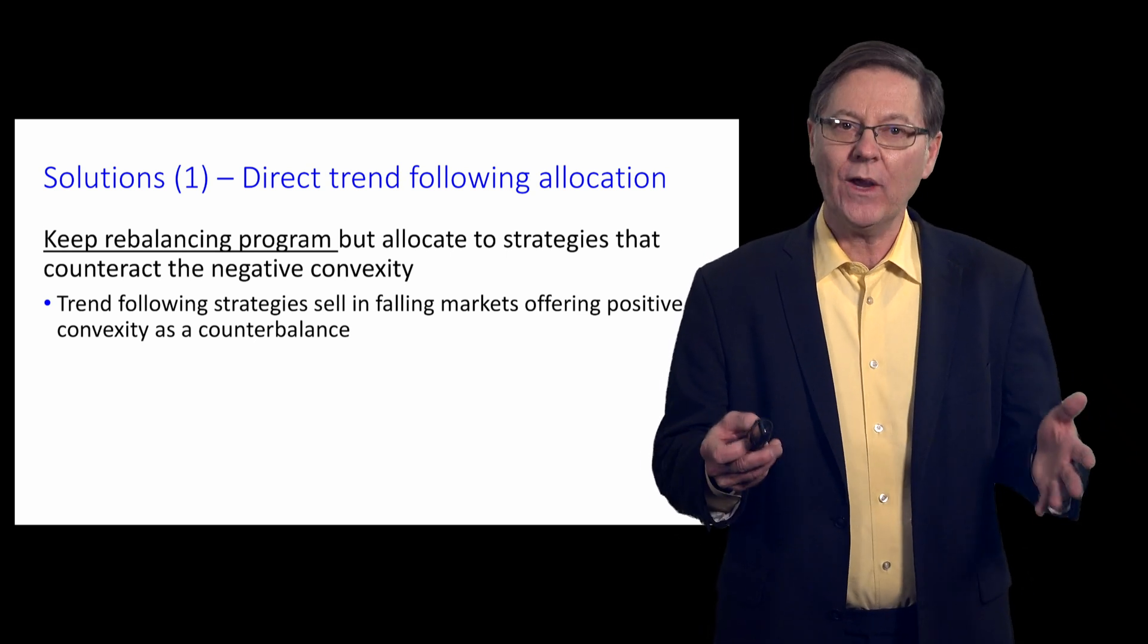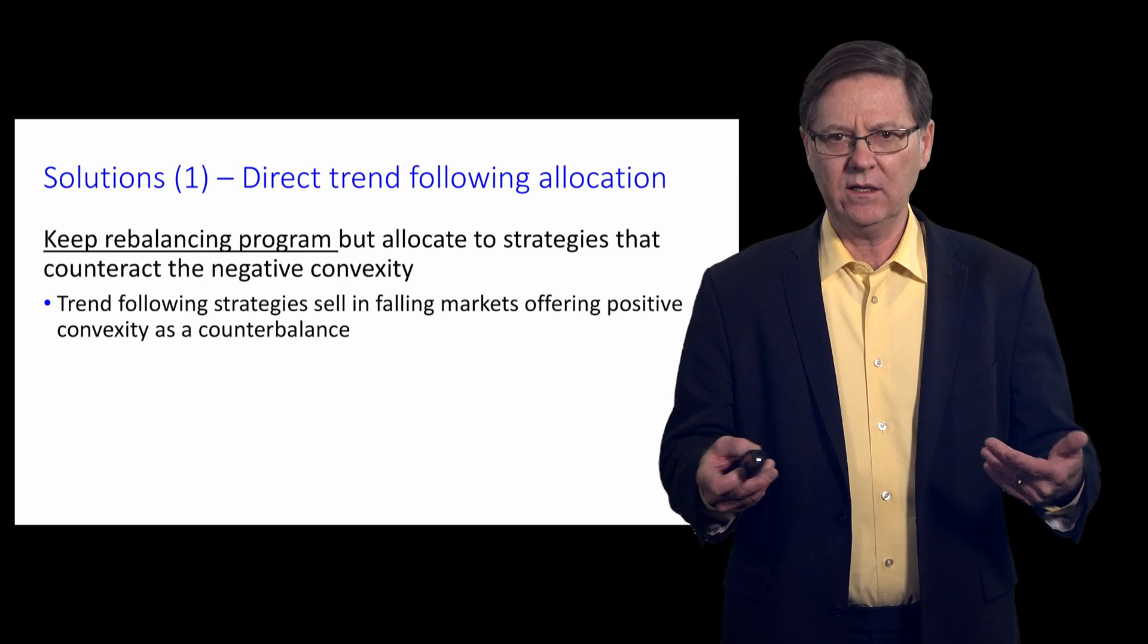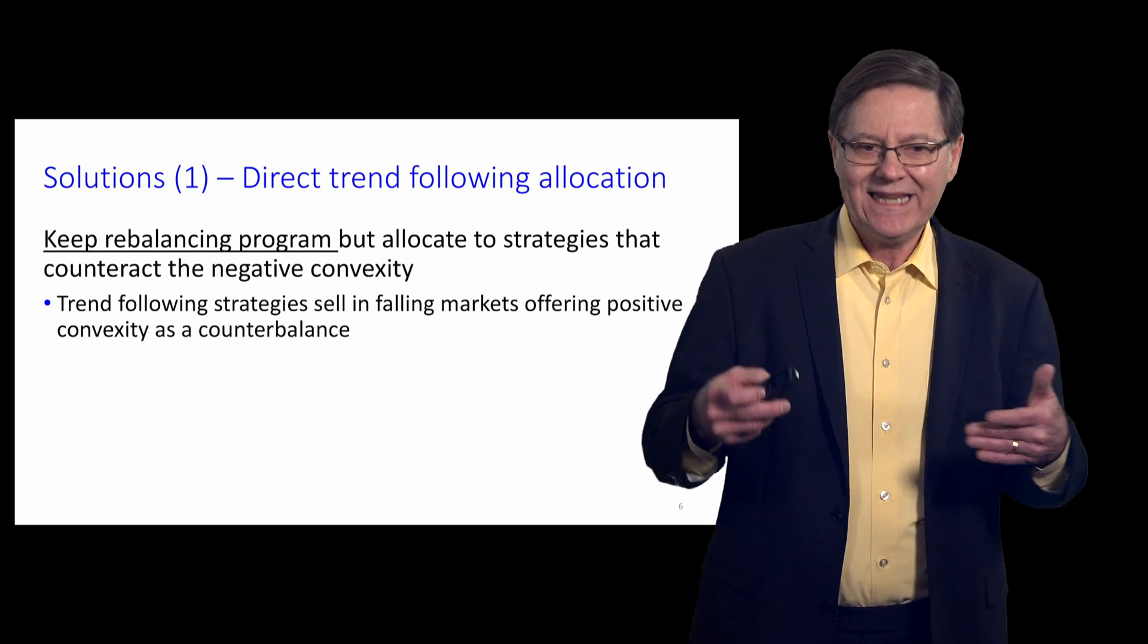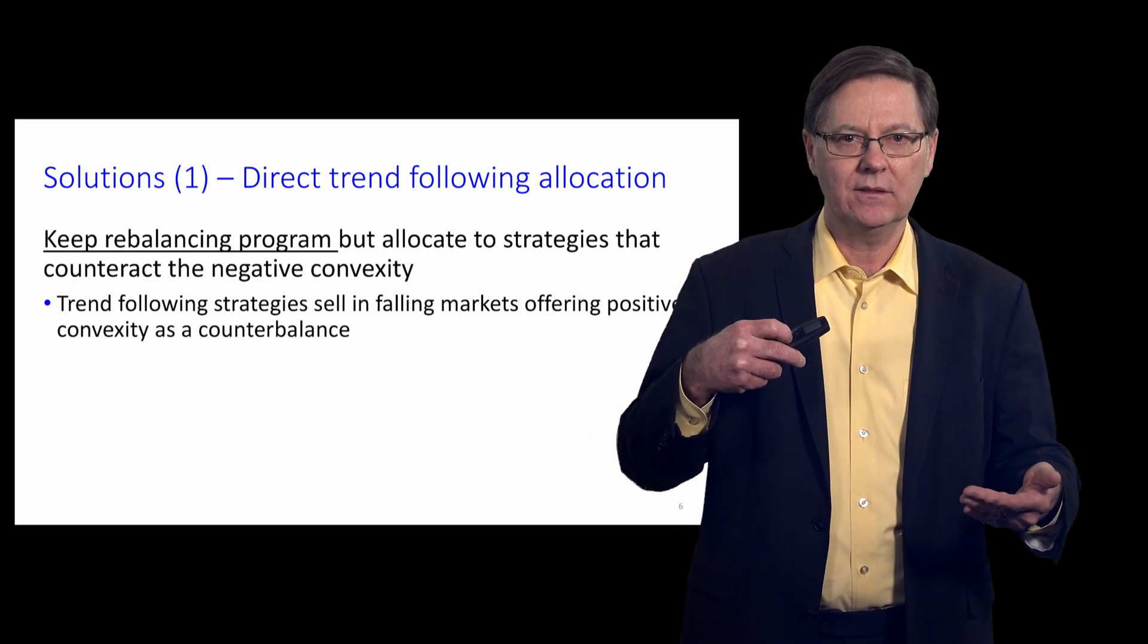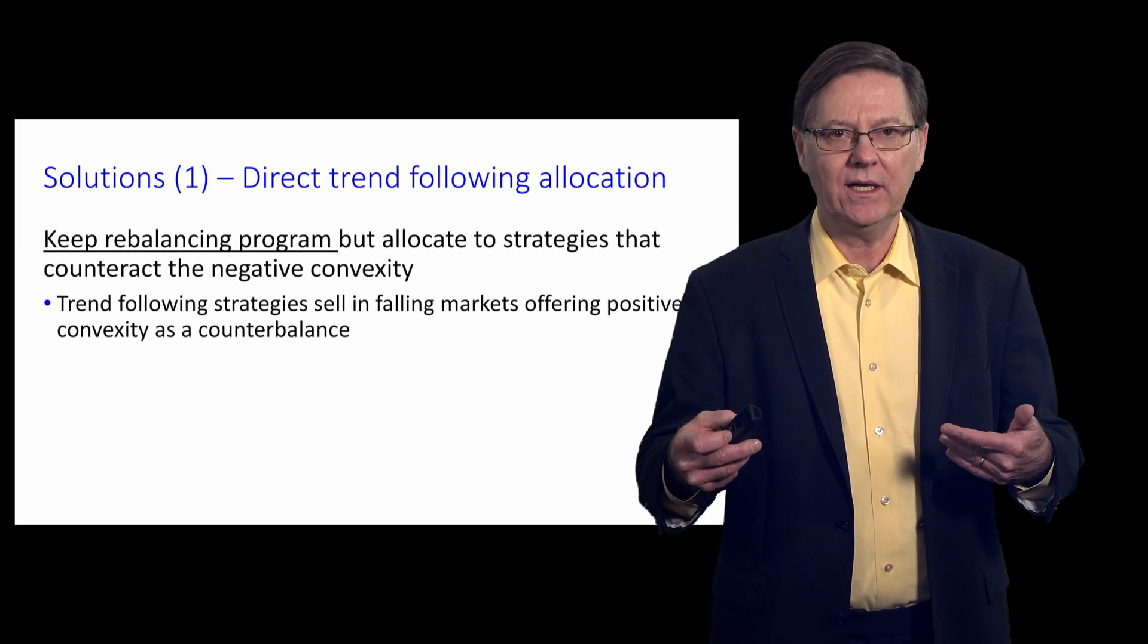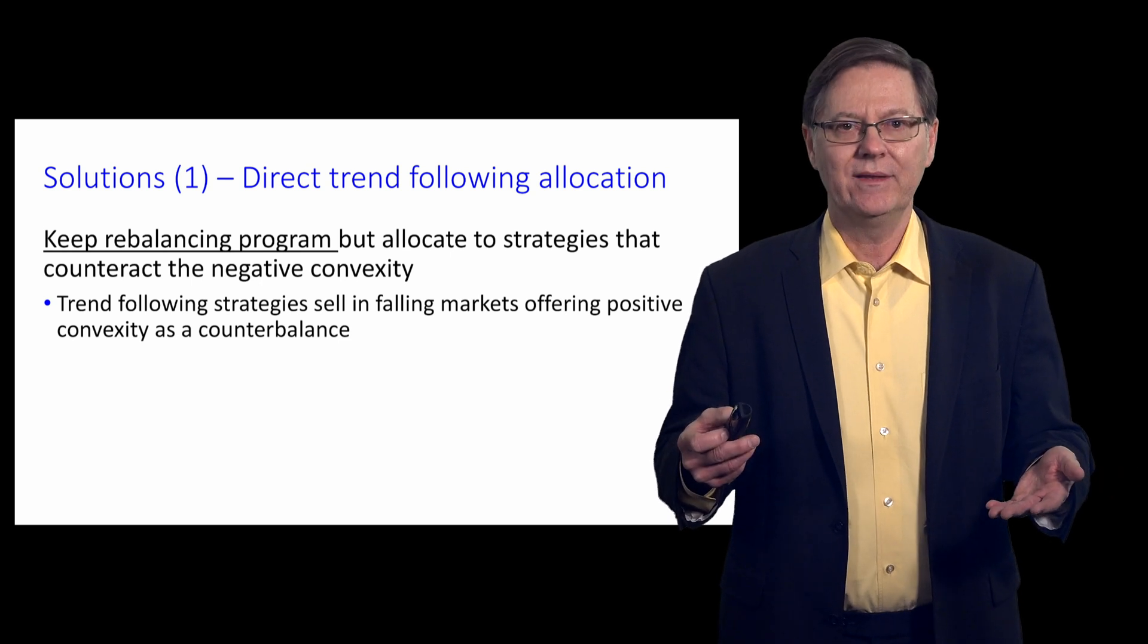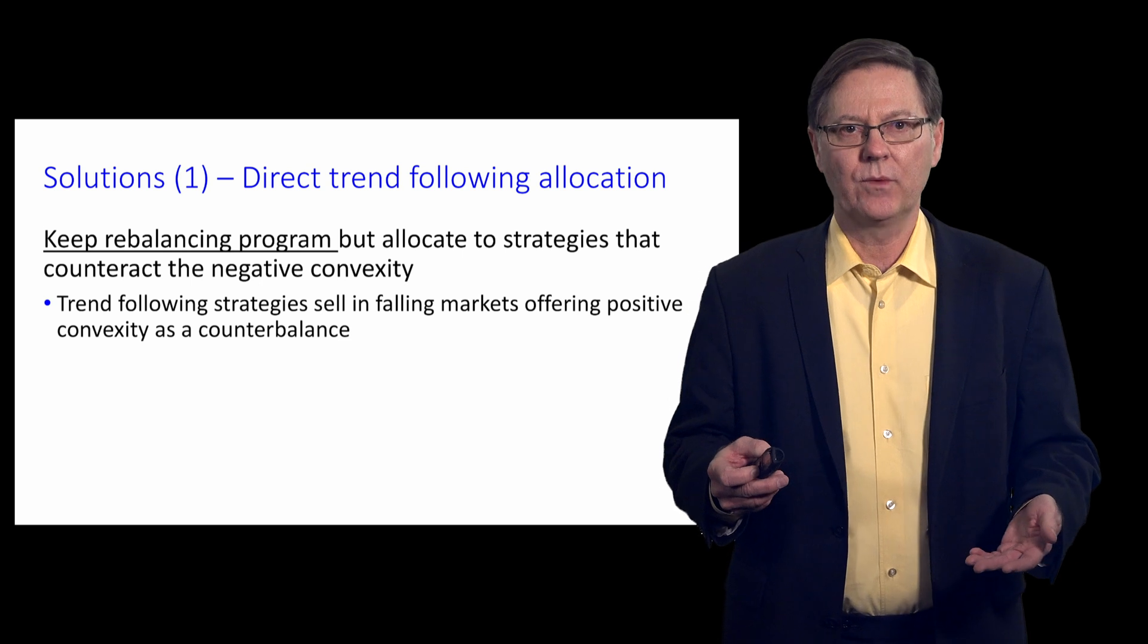But make a direct allocation to a strategy that has the property to counteract the negative convexity. For example, a trend-following strategy in a falling market, in a plunging market, is actually selling. So that provides a counterbalance to the rebalancing. A trend-following system offers positive convexity, and that tends to balance out the damage that's done by the mechanical rebalancing.